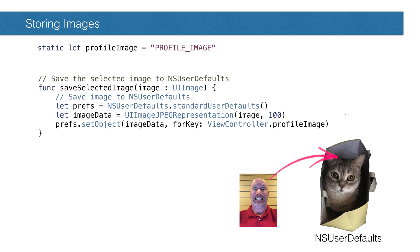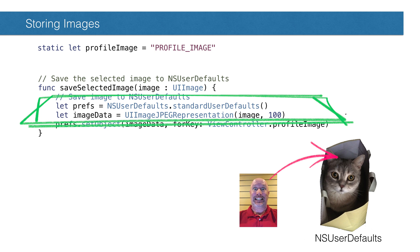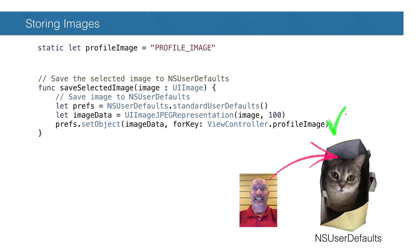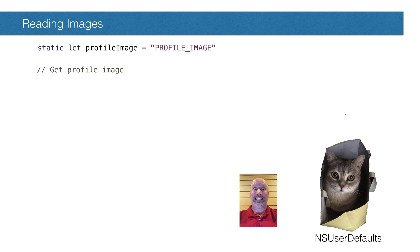We also wanted to store an image. We'll use a UIImagePickerController to get the image and send it to this method. To save it, we need to get the image data — we'll use the JPEG representation of the selected image and store that. To get it back out, we'll use the method objectForKey. What we get back is NSData, just like what we stored. We'll initialize a UIImage with the data, and then display it in a UIImageView. So that's images in and out.